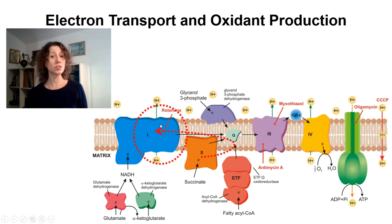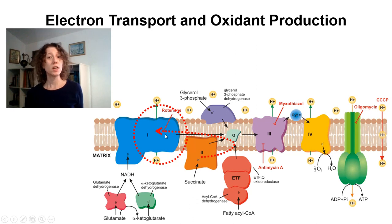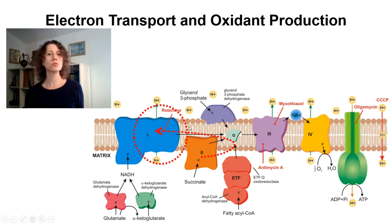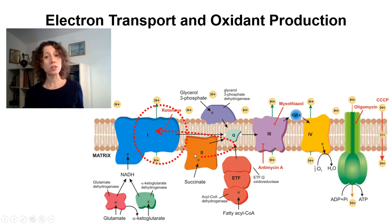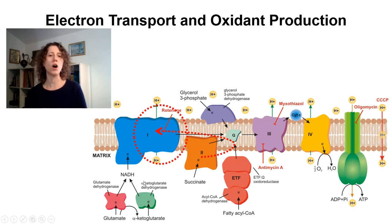Reverse electron transfer also happens in sites upstream of the rotenone inhibitory site. That's why inhibiting complex 1 with rotenone inhibits reverse electron transport, but has no effect on the electron transport rates forward from complex 2 onward, because those don't involve complex 1.